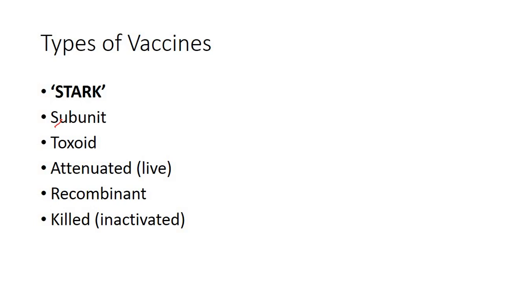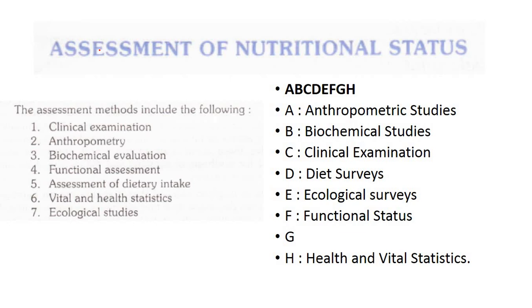For types of vaccines, the mnemonic is STARK: S = Subunit vaccine, T = Toxoid vaccine, A = Attenuated (live attenuated) vaccine, R = Recombinant vaccine, K = Killed (inactivated) vaccine.